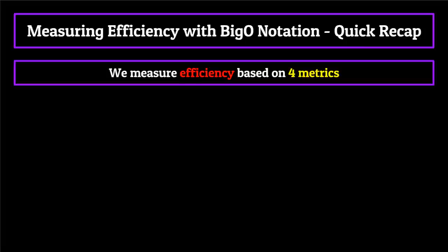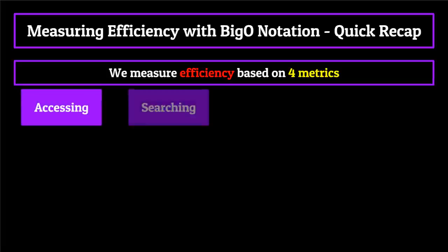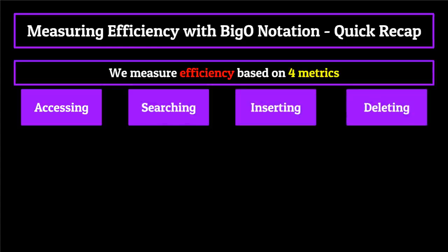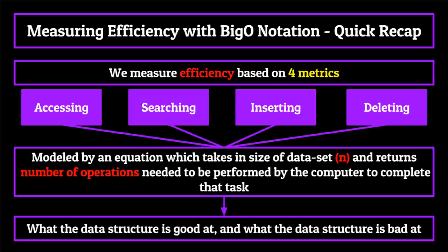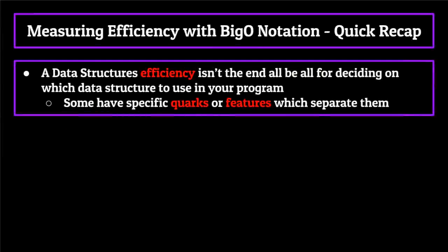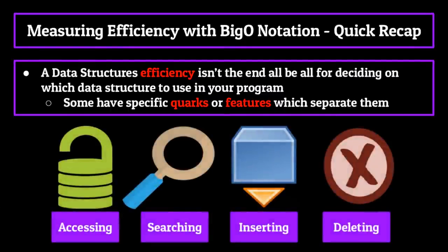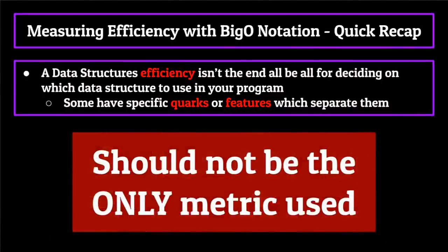To sum up everything that we've learned so far: we measure the efficiency or speed of a data structure based on how well it can perform four basic tasks — accessing, searching for, inserting, and deleting elements within itself. Each of these criteria is modeled by an equation which takes in the size of the data structure in number of elements n, and returns back the number of operations needed to be performed by the computer to complete that task. By measuring these four metrics, we can get a pretty good understanding of what the data structure is good at and what it is bad at. It's important to note that this isn't the end all be all for deciding on which data structure to use. Many of the data structures were structured with specific quirks or features which separate them from the rest and provide additional functionality. Big O notation is incredibly useful and something you should definitely take into consideration, but it should not be the only thing that you use.